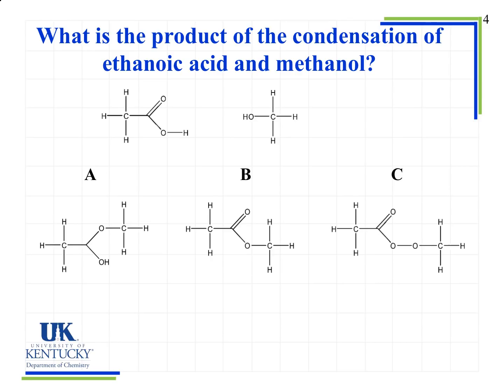Let's look at an example: finding the product of the condensation of ethanoic acid and methanol. On the left we have the carboxylic acid — ethanoic acid — which has a C=O and an OH group. On the right, methanol has an '-ol' ending, indicating an alcohol with an OH group. When we look at these two molecules, we identify the OH groups — one on the ethanoic acid and one on the methanol — and that's where condensation will occur.